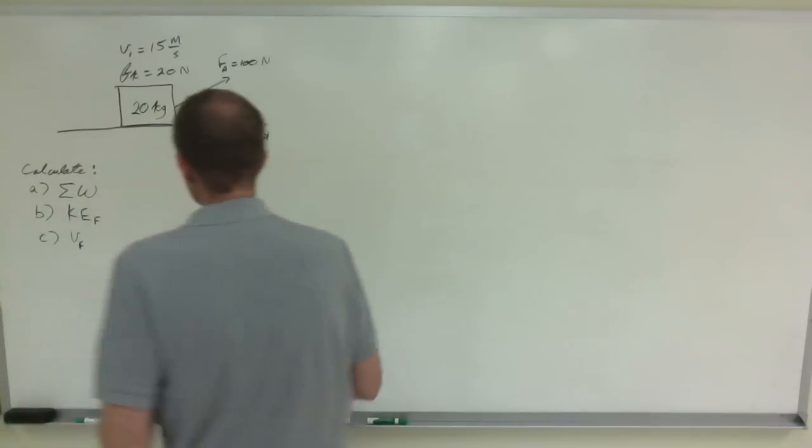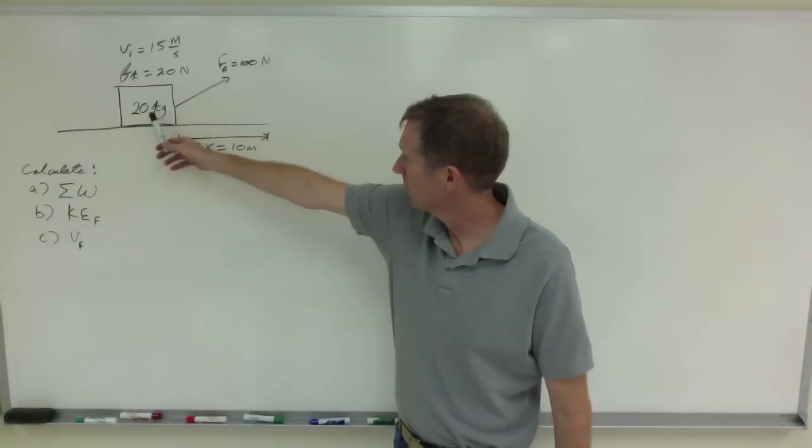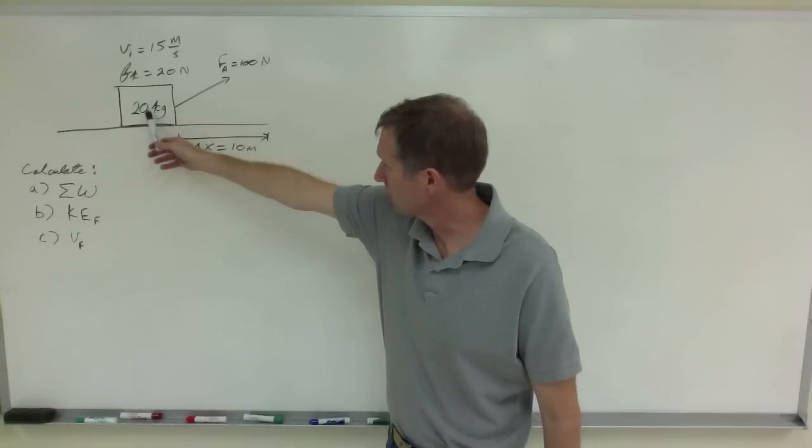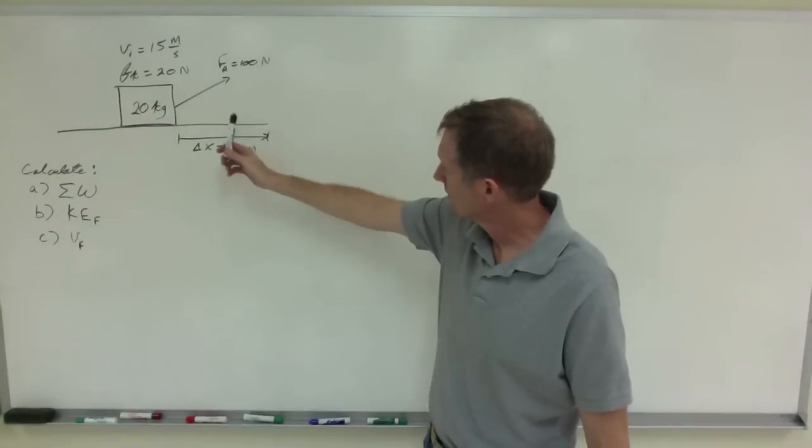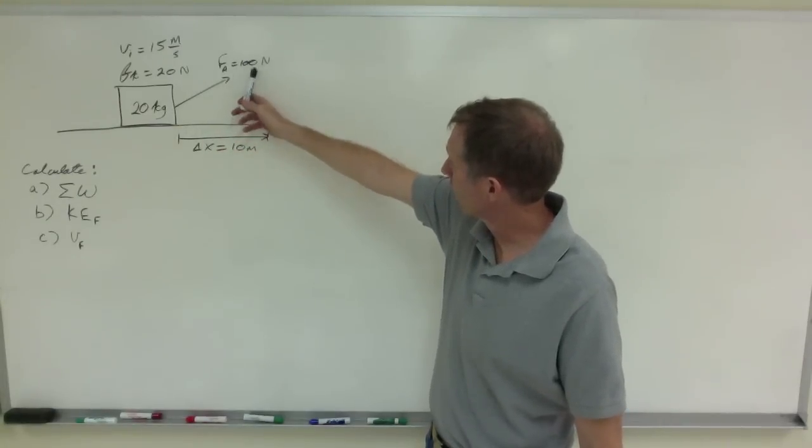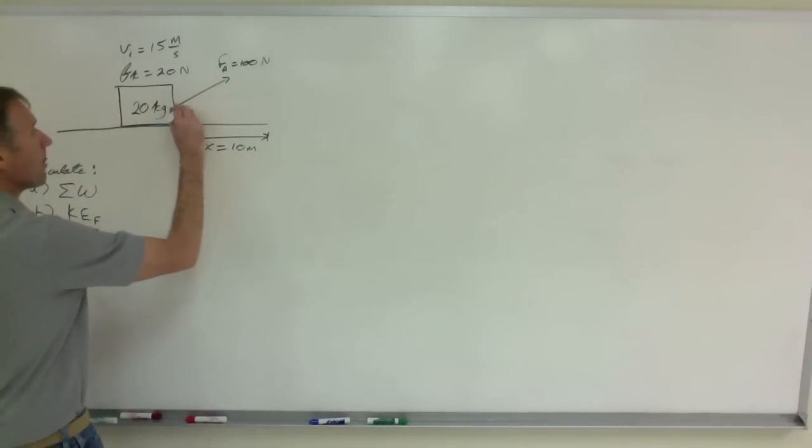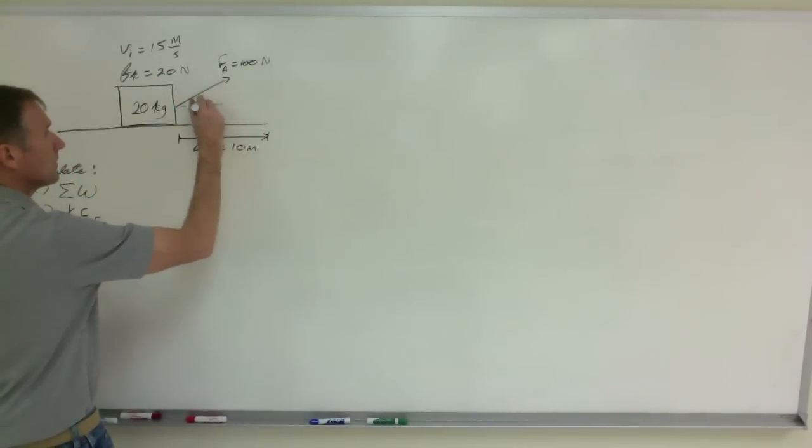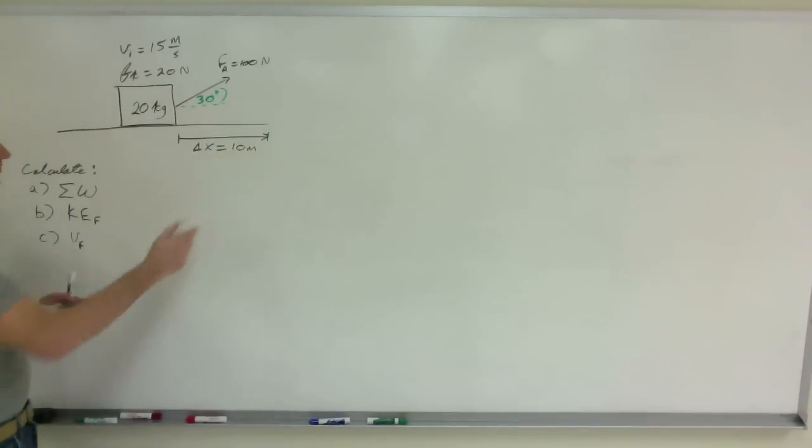Let's say that you have a scenario where you have a 20 kilogram block or box being pulled to the right by an applied force of 100 newtons. I'll say that this angle is 30 degrees. It displaces 10 meters.